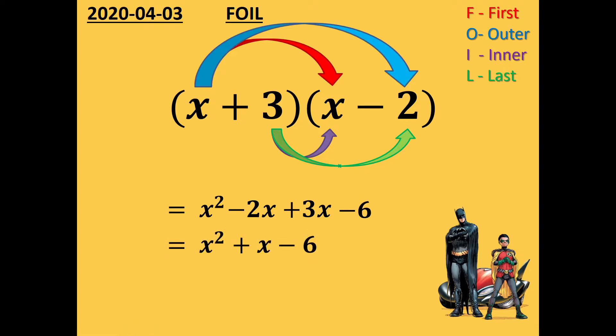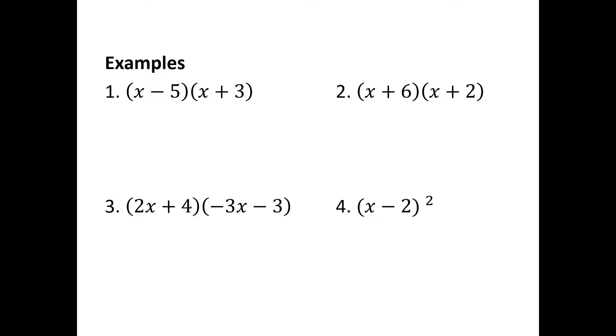We're going to do some examples of these. Just make sure that you're drawing in the arrows for each example. Please write down example 1, and then we'll go from there. According to FOIL, I need to do my first terms first, so x times x gives me x squared. Then my outer two terms, x times 3 gives me 3x. My inside terms, negative 5 times x. And then the last two terms, negative 5 times 3 is negative 15. Simplify my like terms, and that's what I've got.